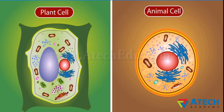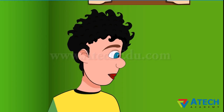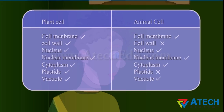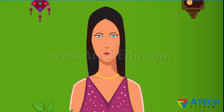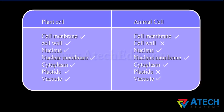Now Jim, you tell me how a plant cell is different from an animal cell. I think one big difference is that plant cells have a cell wall but animal cells do not. That's correct. Plastids are also not present in the animal cell.